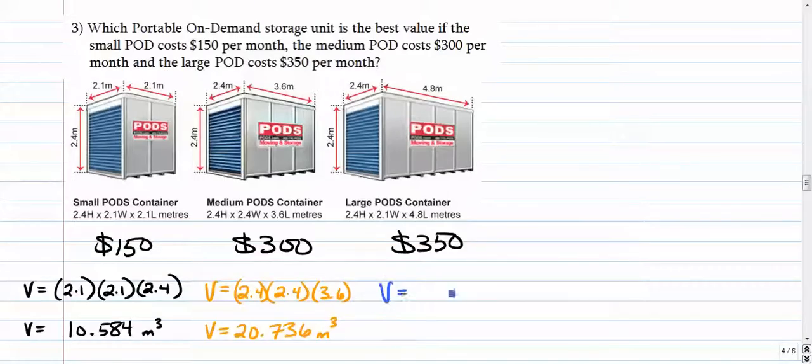So put that all into your calculator. 2.4 squared times 3.6 is 20.736 cubic meters. And the last one, the largest one is 2.4 times 2.4, we can just square that, times 4.8. So 2.4 squared times 4.8, 27.648 cubic meters.